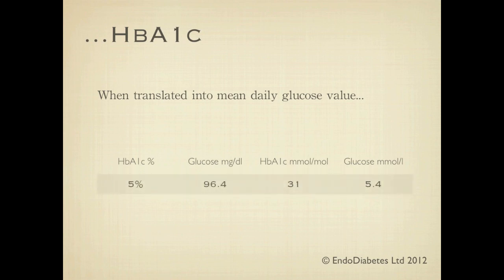An HbA1c of 5%, which is 31 millimoles per mole, is normal unless a person has an altered hemoglobin molecule. This equates to a mean blood glucose of 96.4 milligrams per deciliter, or 5.4 millimoles per liter. In a person with an HbA1c of 7%, which in most cases represents good control, mean daily glucose is substantially higher: 154.2 milligrams per deciliter, or 8.6 millimoles per liter.